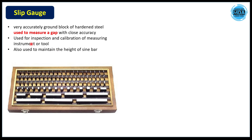Next is the slip gauge. It consists of a set of hardened steel blocks of different sizes. These blocks are used to verify gaps between two objects. While the feeler gauge is used for small gaps, the slip gauge is used when there is a sufficient or larger gap between components.